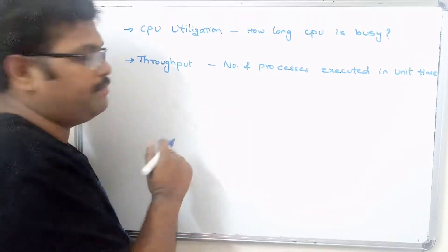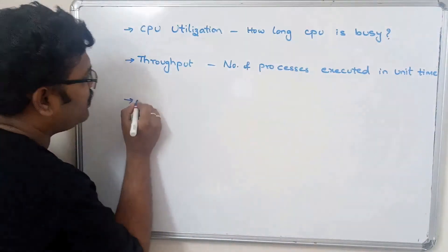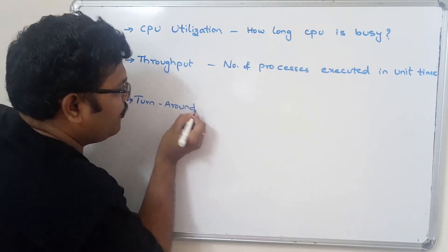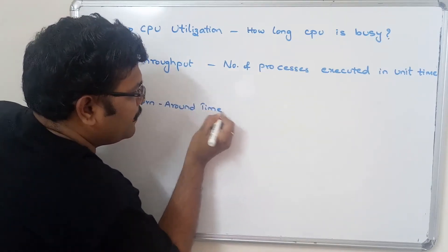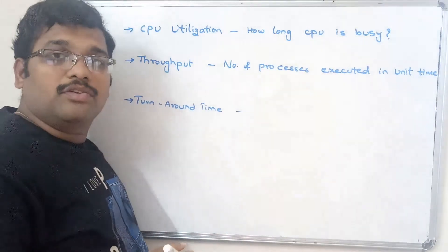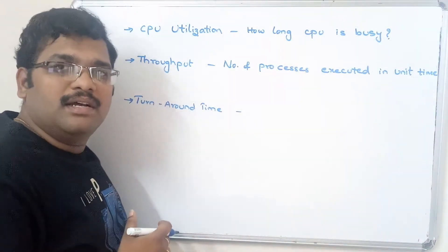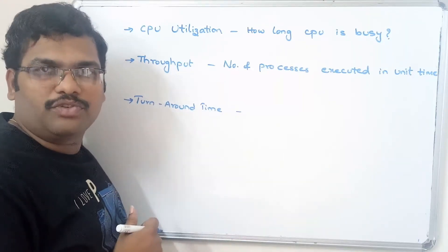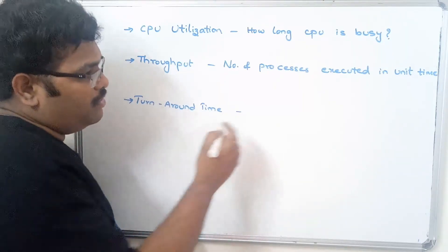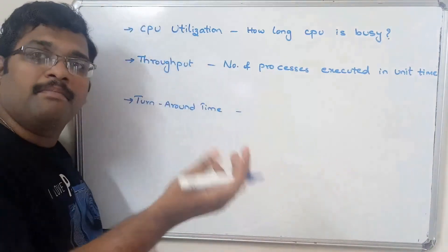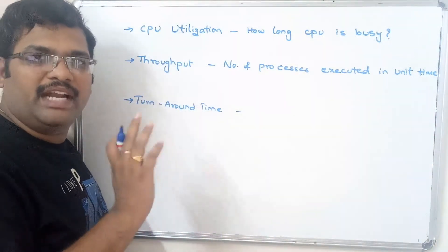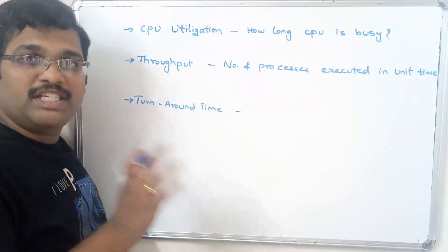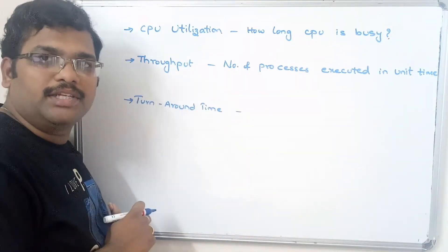The next criterion is turnaround time. Turnaround time means how much time the process takes to complete its execution — the completion time minus the start time, that is, the difference between the beginning of the process and the ending of the process, showing how much time it takes for execution.